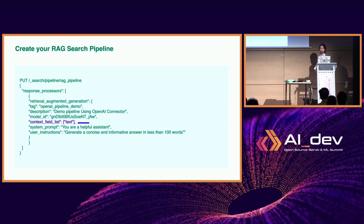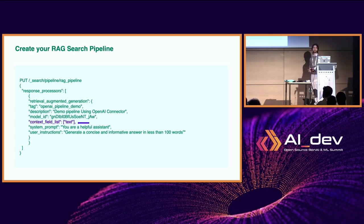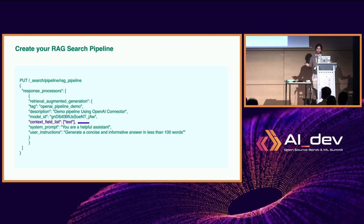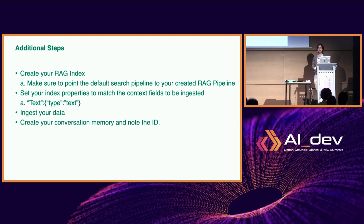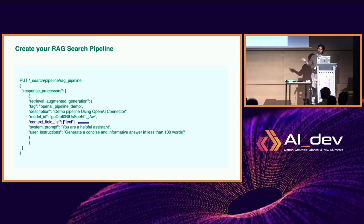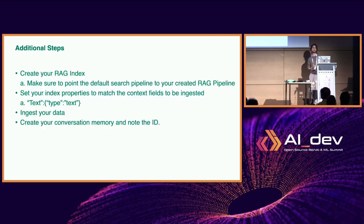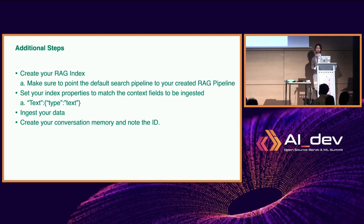The system prompt and user instructions can be edited as much as you want to get a specific type of output from the LLM. For this example I kept them as defaults for testing. Then you point your search pipeline toward your RAG index, set the context fields to match the text data you'll be pulling into the prompt, ingest your vector-embedded data, and create the conversation memory — noting its ID for use in your queries.